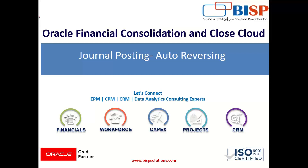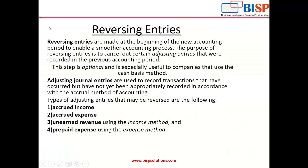Welcome to the BISP solutions. Today's topic is auto reversing entries in journal. Reversing entries are made at the beginning of the new accounting period to enable a smoother accounting process. The purpose of the reversing entries is to cancel out certain adjusting entries that were recorded in the previous accounting period.